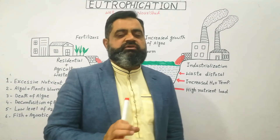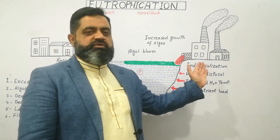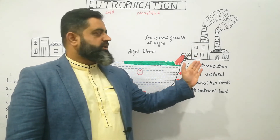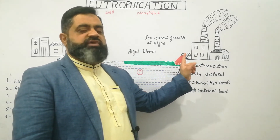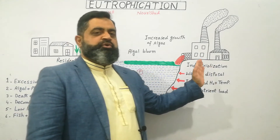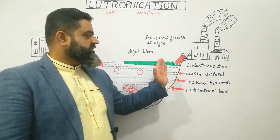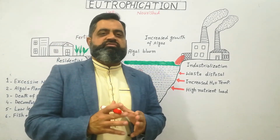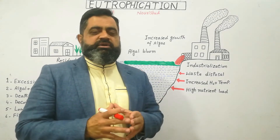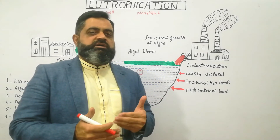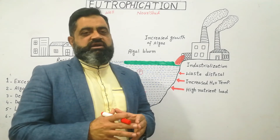The third main source of nutrients is industries. Industries are also very important for our development, but the waste material coming from factories is deposited into water bodies in the form of liquid effluents. These effluents contain a rich amount of nitrates, phosphates, carbon, and many other elements which can increase the trophic level inside the water bodies.